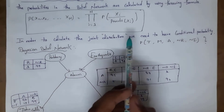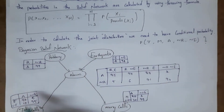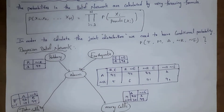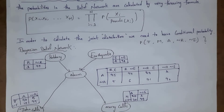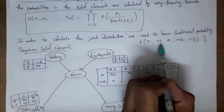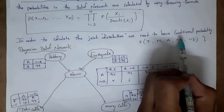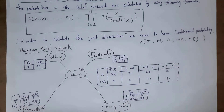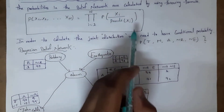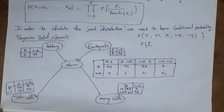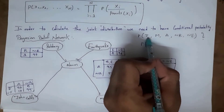To calculate joint distribution, we need the conditional probabilities already written in the conditional probability tables. Joint distribution means calculating probabilities for multiple events simultaneously. Here we calculate the probability that John calls, Mary calls, the alarm rings, robbery does not occur, and earthquake does not occur. We use the formula: probability of a variable equals the probability of that variable given its parent variable.